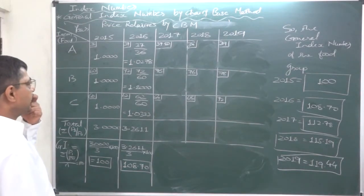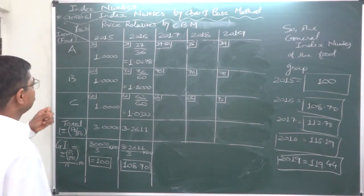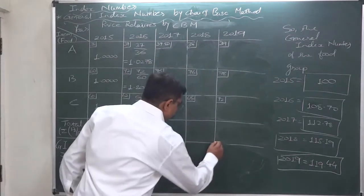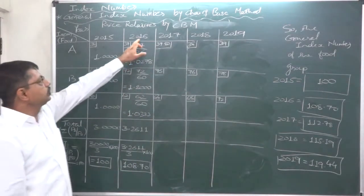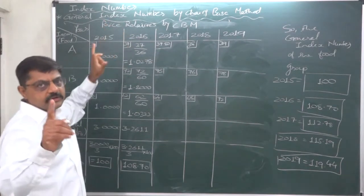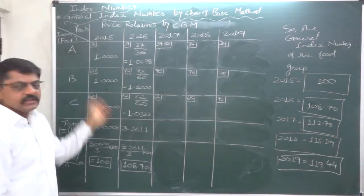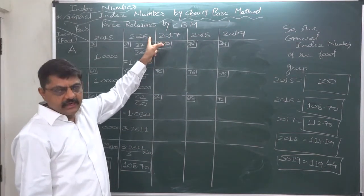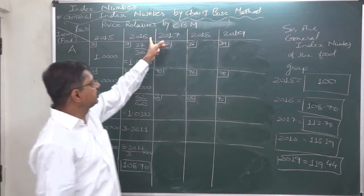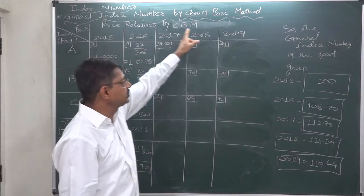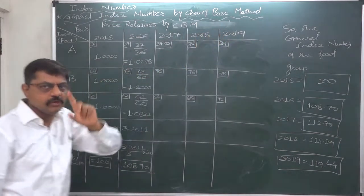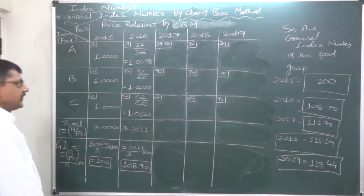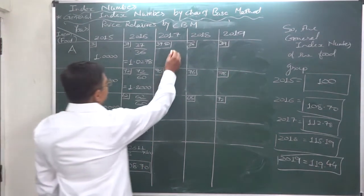We are starting to calculate the price relatives from the year 2017. In chain base method, 2016 will be the base year for 2017, and not 2015. In chain base method, the preceding year becomes the base year for any given year — so for 2017 the base year is 2016, for 2018 it is 2017, and for 2019 it is 2018. Keep this difference in mind at all times.